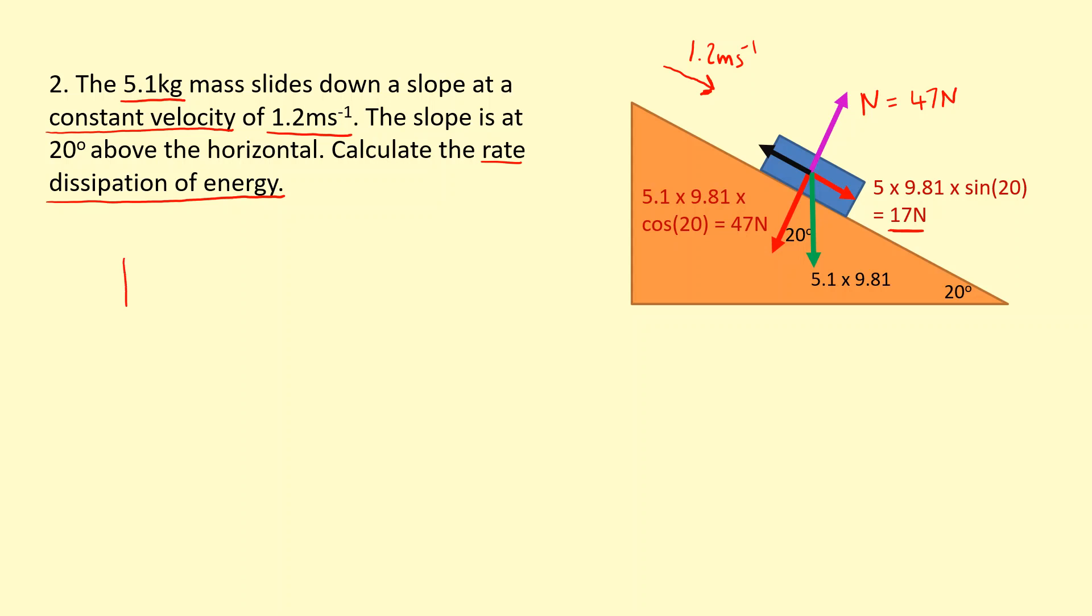So now I can use the equation P equals Fv. So the power is, in this case, force is 17 newtons times the velocity in that direction, 1.2. That gives me 20.4 watts.